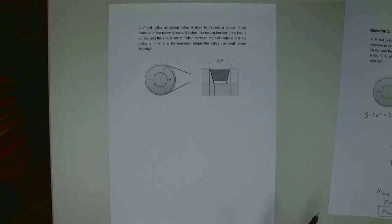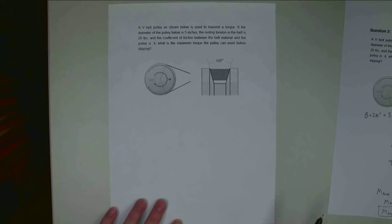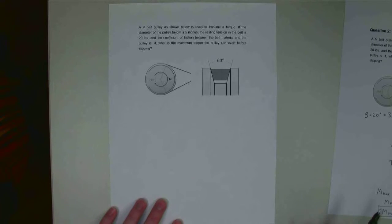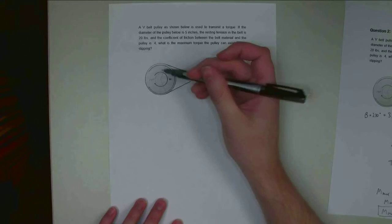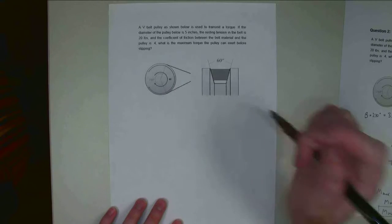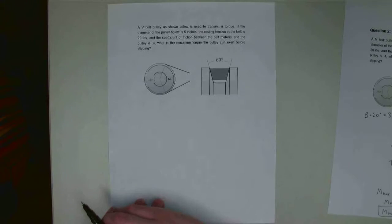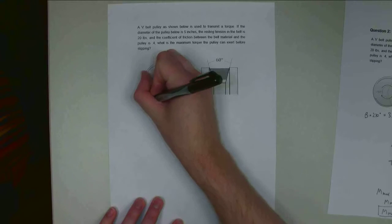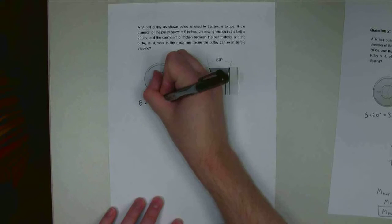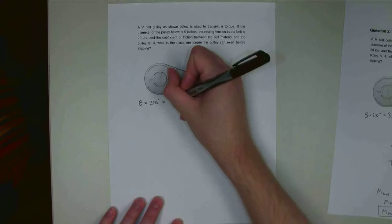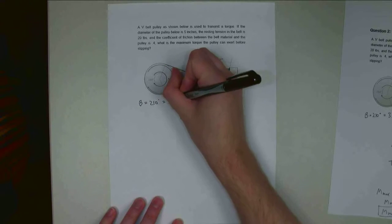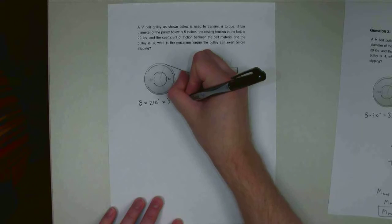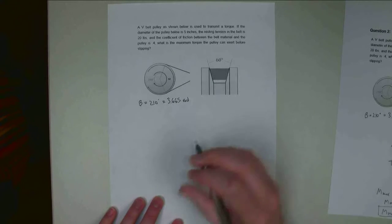So there's a few different things we need to do to start this problem. Step number one, I'm going to go ahead, I know the contact angle between the belt and the pulley is 210 degrees. I'm going to need that in radians, so I'm going to convert that early on. So beta is 210 degrees, which is about 3.665 radians.